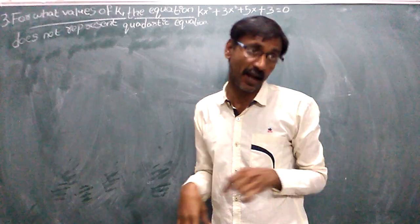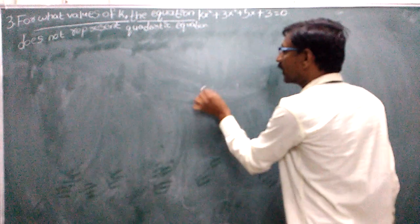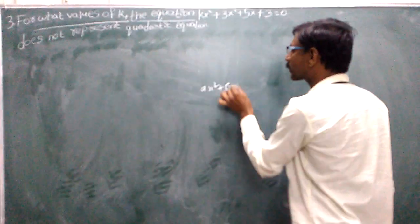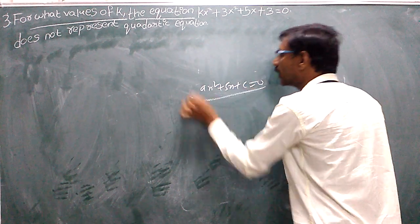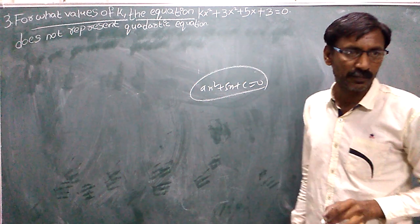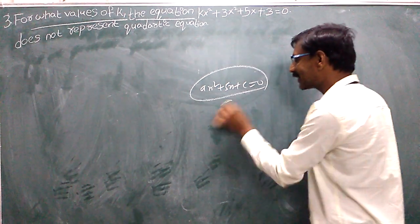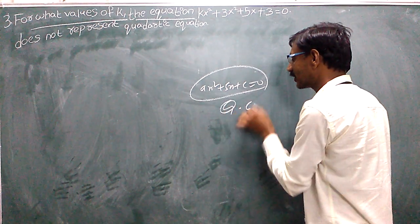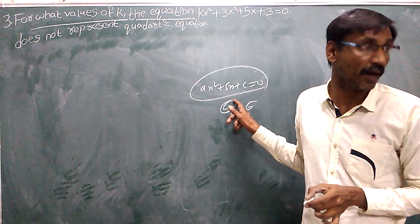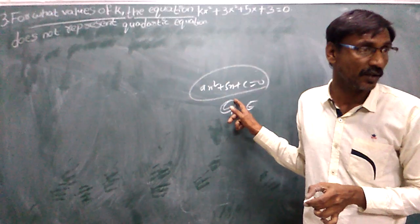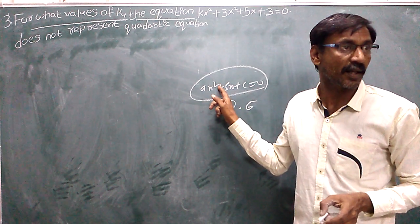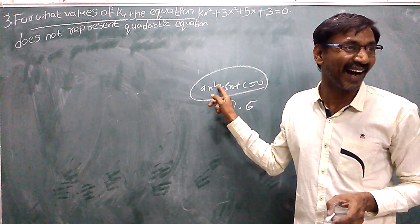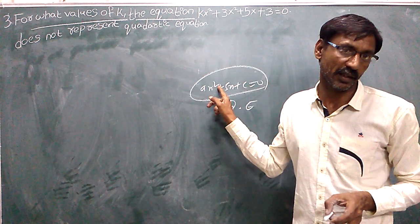The general form of a quadratic equation is ax squared plus bx plus c equals 0. This is the general form of a quadratic equation, where the power 2 defines it as quadratic.